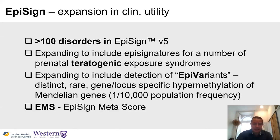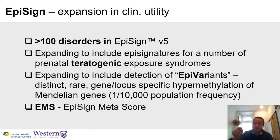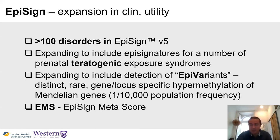The EpiSign continues to expand in clinical utility — we now have epi-signatures for 100 different disorders and are expanding beyond genetics into teratogens. We are also looking at EpiVariant information clinically: for example, hypermethylation of an autosomal dominant gene causing repression of expression through promoter-specific regulatory elements.